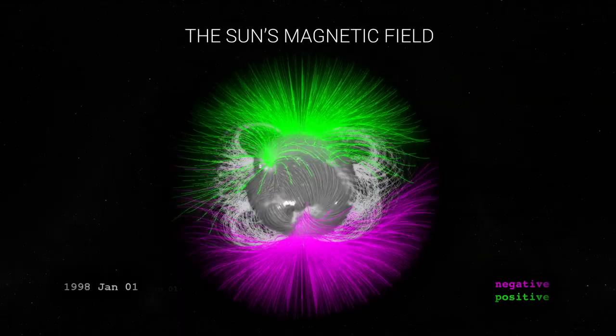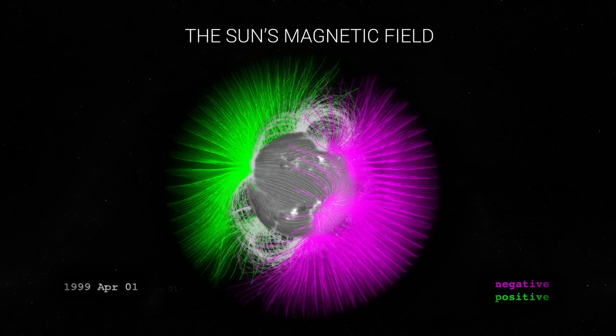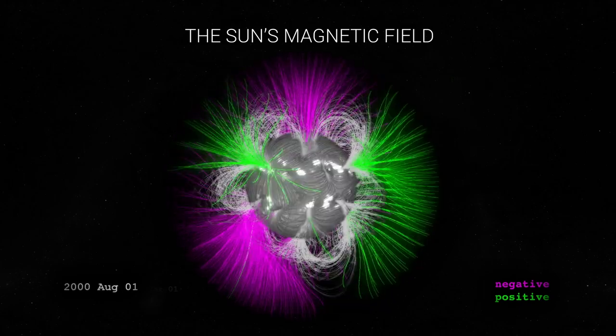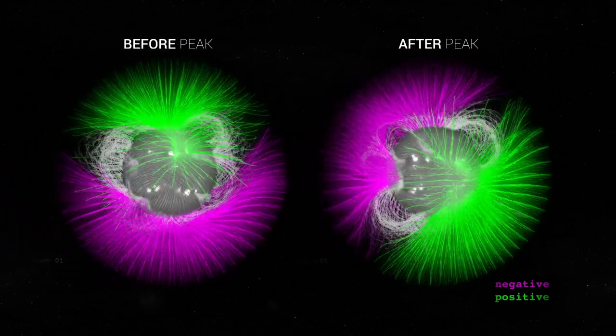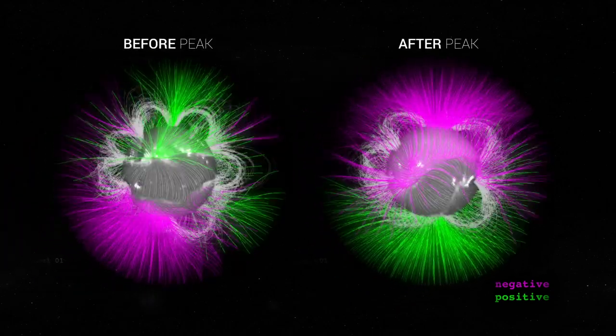Roughly every 11 years, the sun's magnetic field ramps up. This is known as the solar cycle. And at the peak, the sun's magnetic poles flip, north becomes south and vice versa.